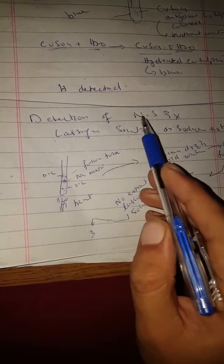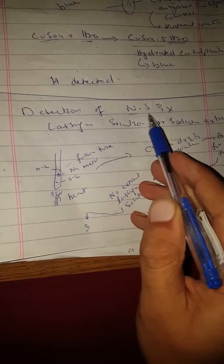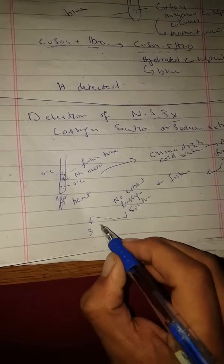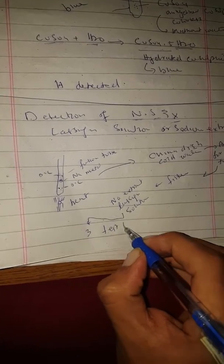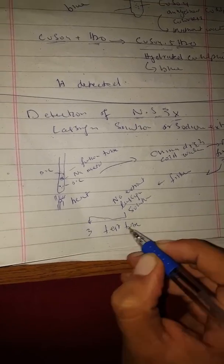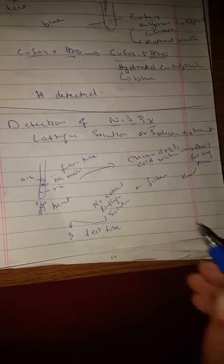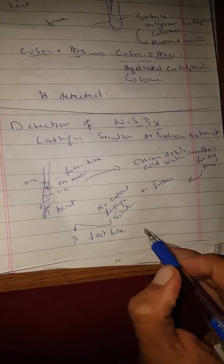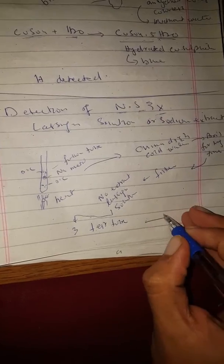We have to divide the sodium extract into three tubes, because we need to test for one nitrogen and one halogen. We divide it into three test tubes with the solution. I will continue on the next page.